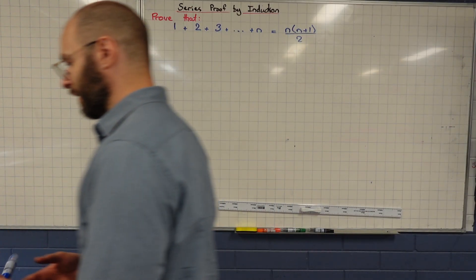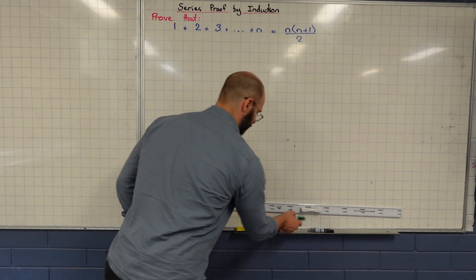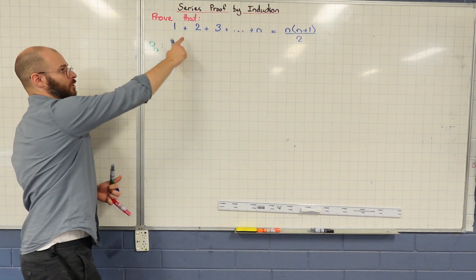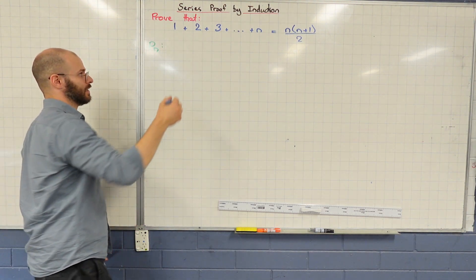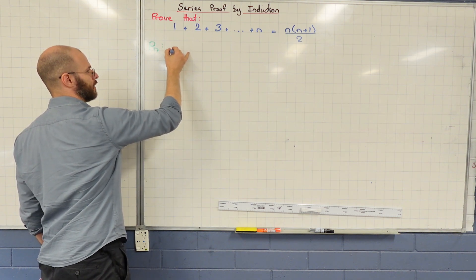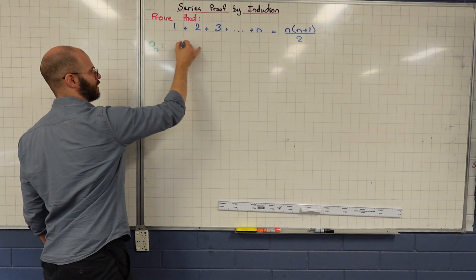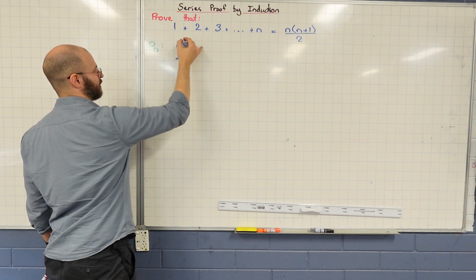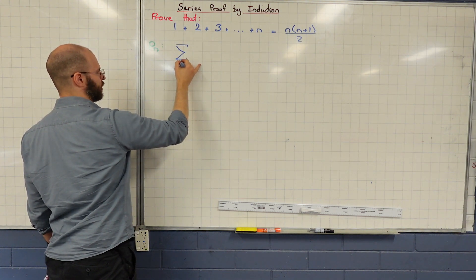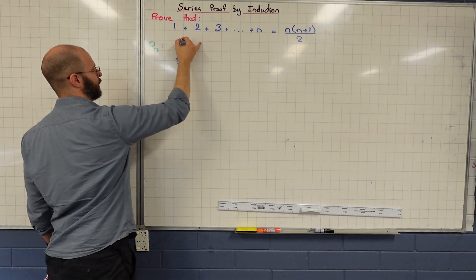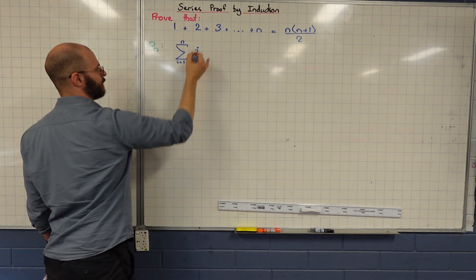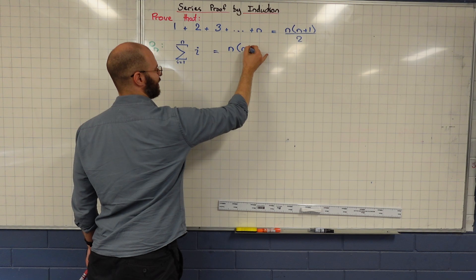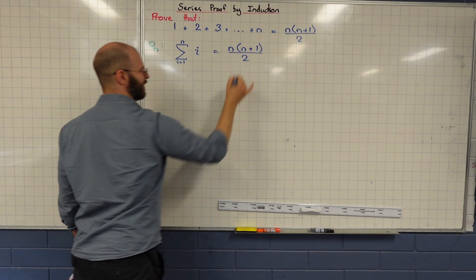First thing when we encounter a problem like this is we have to define what is that P of n. So starting off, what we'd say is P of n is equal to, and how could we write this as a series using sigma notation? What symbol do we use? The sigma. It's actually an S, a Greek S for sum, and it's going to be i equals one and then up here is going to be n and then i plus one equals n times n plus one over two. There we go.